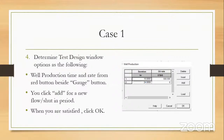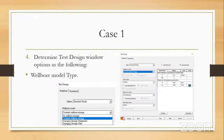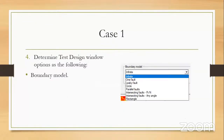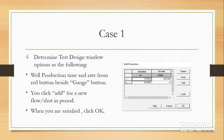In this step you need to determine the well production time and rate from the rate button — the red button at the bottom of the test design window. You enter the duration of the production period and the rate, and also the duration of the build-up or shut-in period. You enter the first row, click add, enter the second row, and when satisfied click OK. Here we design our test so the well will produce for 10 hours at a rate of 500 barrels per day, then it will be shut in for 24 hours.